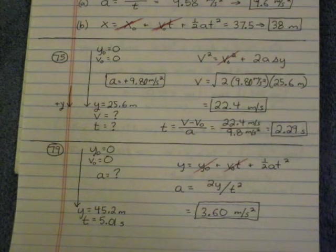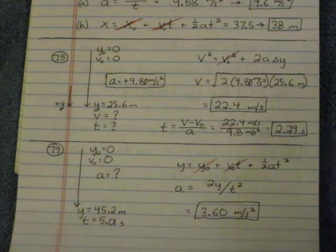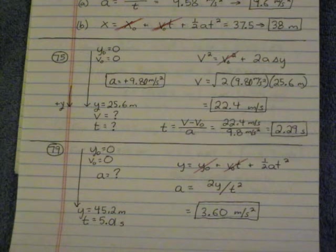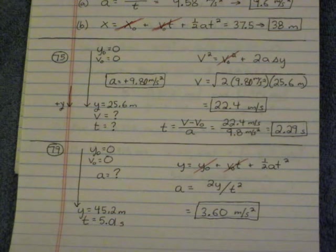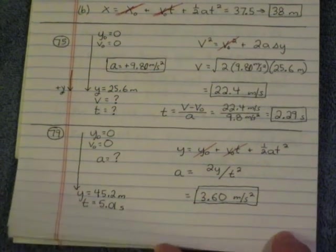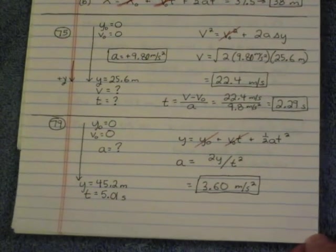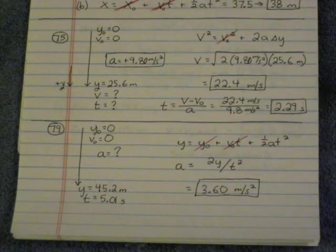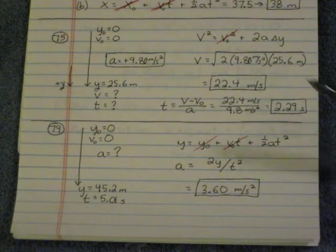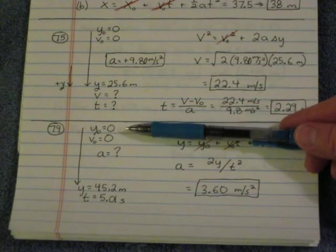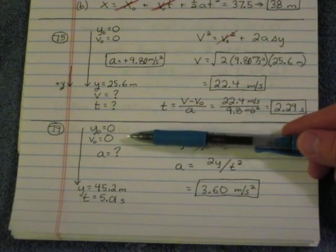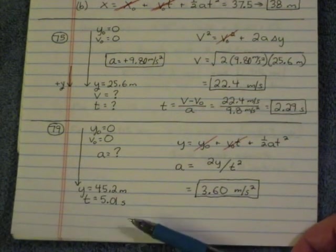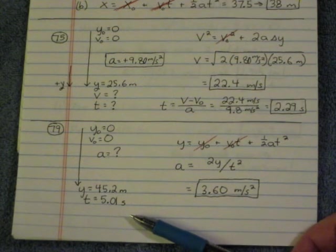79 involves a free fall on the planet Mars. So it's asking to solve for acceleration due to gravity, which is not going to be 9.8 meters per second squared because that's only on the planet Earth. On Mars, it's going to be something different. That's the point of this problem. The astronaut wants to know what is acceleration due to gravity on Mars. So it drops a known distance. Y naught, V naught, or equal to zero. Acceleration we don't know. Displacement is 45.2 meters. The time it takes to hit is 5.01 seconds.